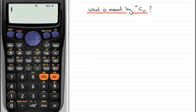And you'll often see this function, NCR, on many scientific calculators. On this particular calculator, it's just above the division sign here.